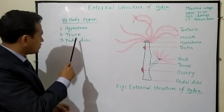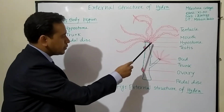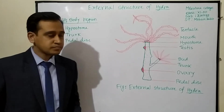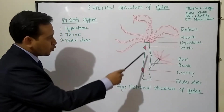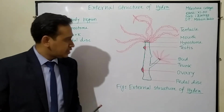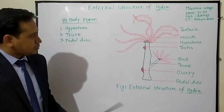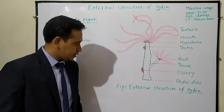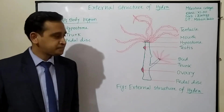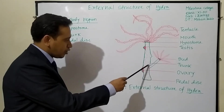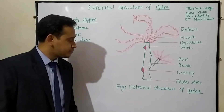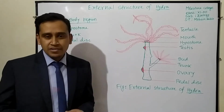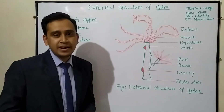The second region is the trunk — the body region between the hypostome and the pedal disc. This elongated part is called the trunk. The trunk bears gonads and buds. In breeding season, the oral end of the Hydra bears testes and the proximal end bears an ovary. A well-developed bud has tentacles, hypostome, and trunk, and when detached from the parent, an individual Hydra is formed.